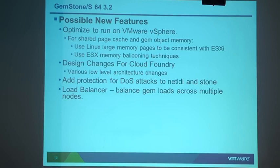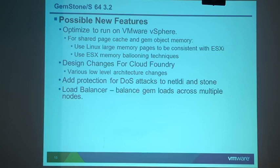There are also some low-level changes to operate better in the cloud in terms of scalability. The cloud is very picky about which machines can listen on a socket, which can accept connections, and which can initiate connections — things we've taken for granted in the data center. We also want to add protection for denial-of-service attacks on netldi and stone processes, which have threads listening on well-known sockets. There are techniques to minimize that risk and make the product more robust for cloud and internet usage.